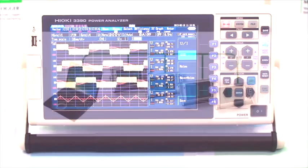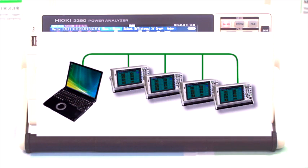Up to four 3390s can be daisy chained and synced together to provide up to 16 channels of analysis.